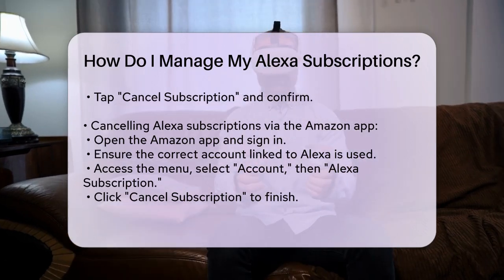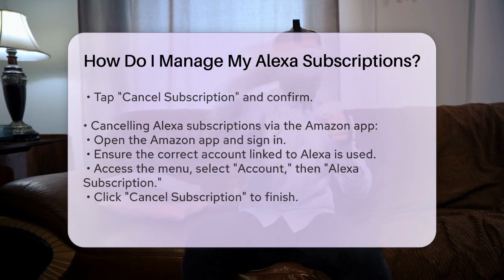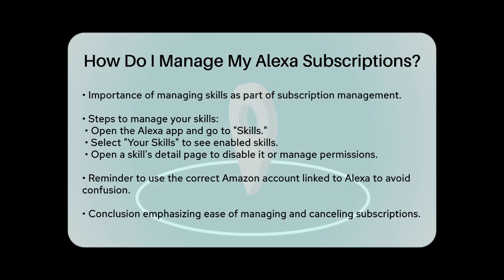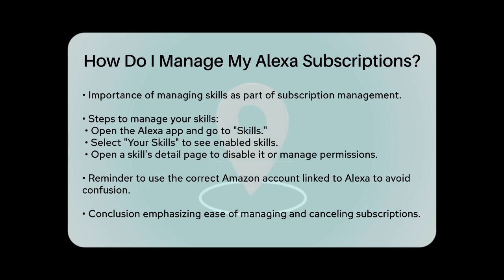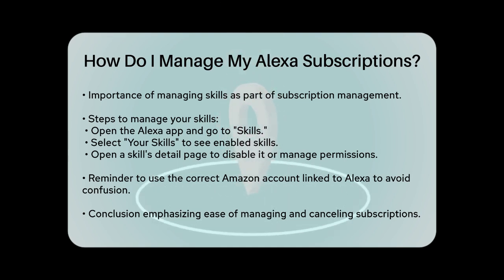Managing your skills is also part of managing your subscriptions. Open the Alexa app, go to the menu, and select Skills. Choose Your Skills to view all the skills you have enabled. Select a skill to open its detail page, where you can disable the skill, manage permissions, or adjust notifications.